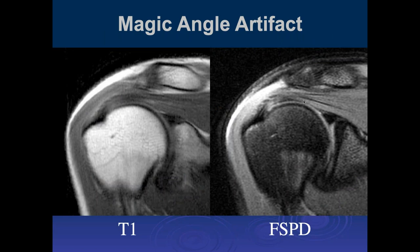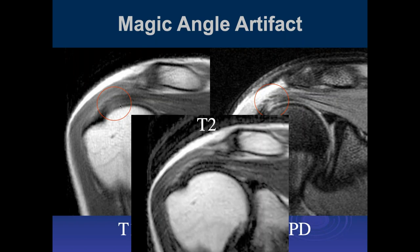Magic angle artifact: if the tendon goes at roughly 55 degrees to the direction of the main magnetic field, you can end up prolonging the T2 time of the tissues and get increased signal intensity on short TE images. This is visible on short TE imaging — T1 and short TE PD fat sat — and goes away on longer T2 TE images. This is another reason we like to do T2s in the coronal plane rather than PD or T1 weighted images — it eliminates potential confusion of magic angle artifact being misinterpreted as tendinosis.